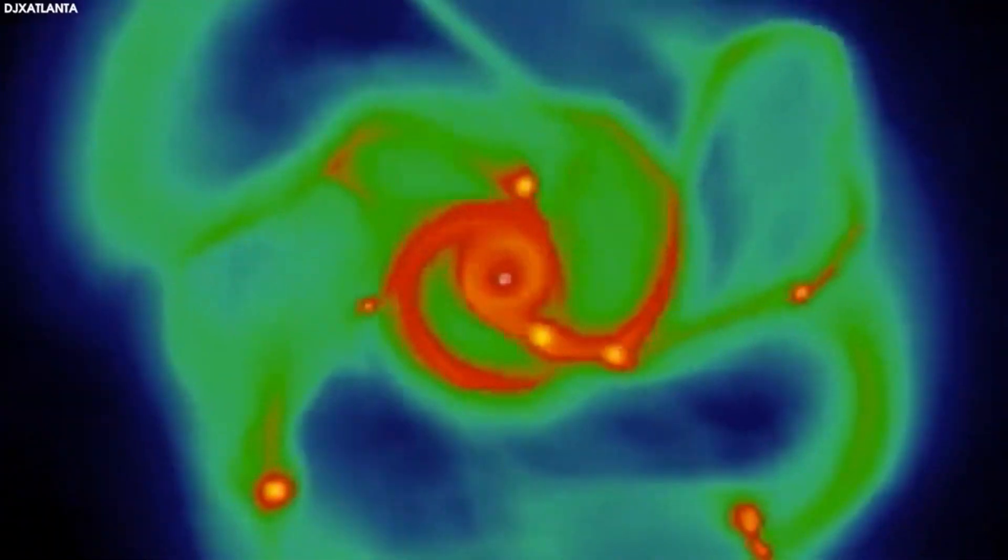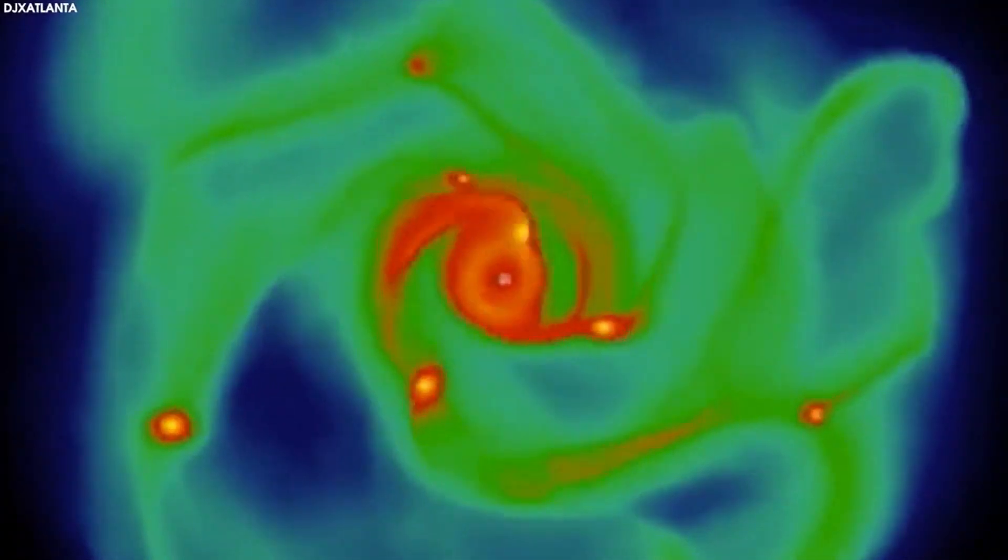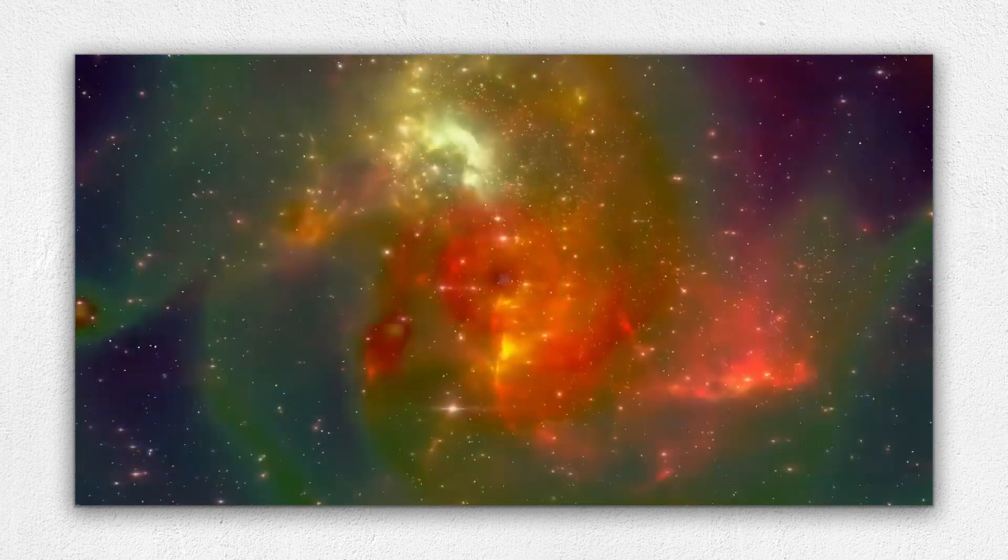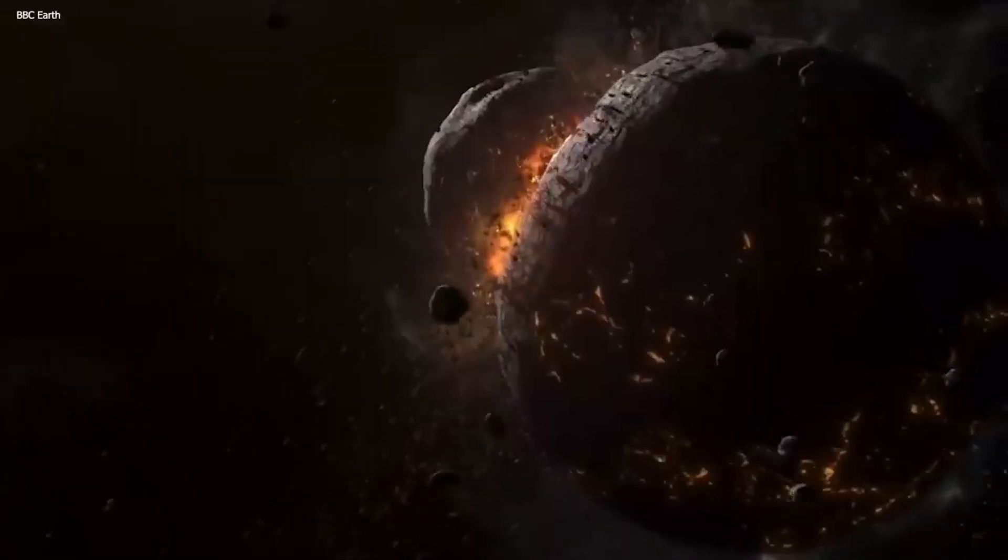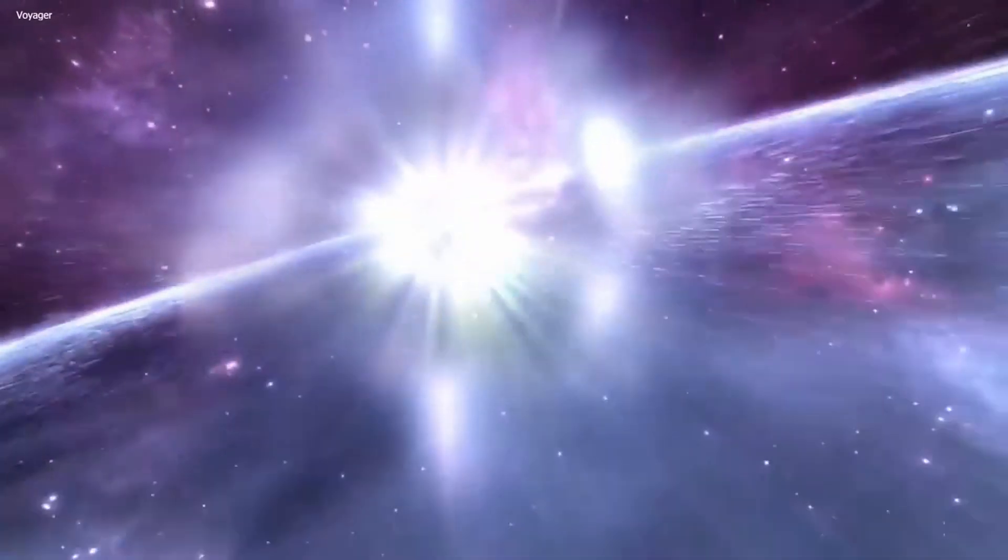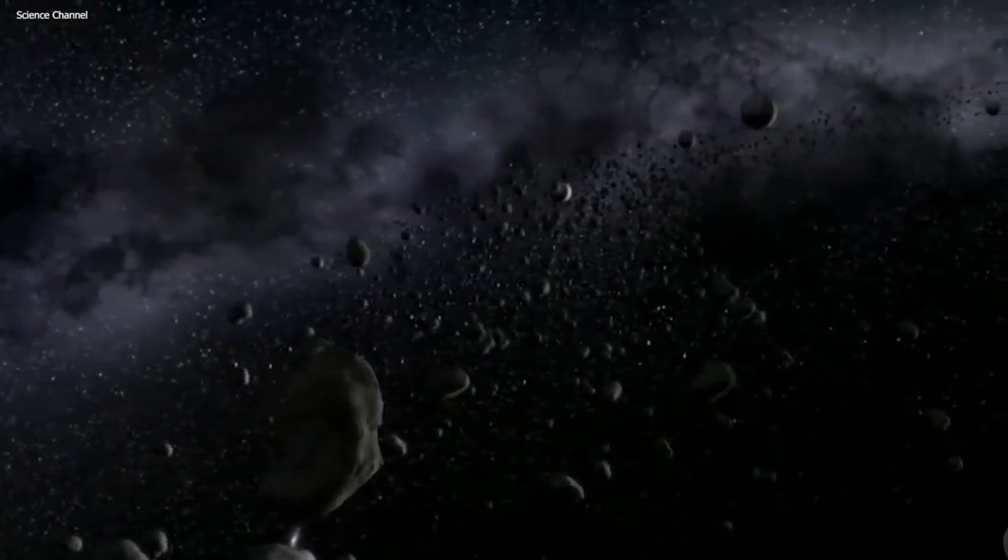However, the following interaction of these free electrons with nuclei led to the formation of neutral atoms, or atoms with equal positive and negative electric charges. This critical transformation facilitated the emergence of visible light and marked a significant milestone. It was approximately 380,000 years after the inception of the Big Bang.